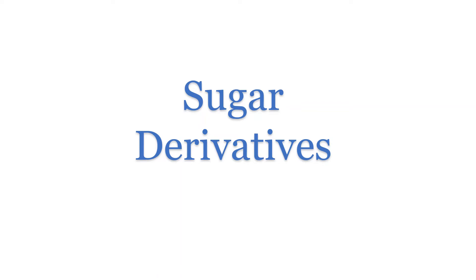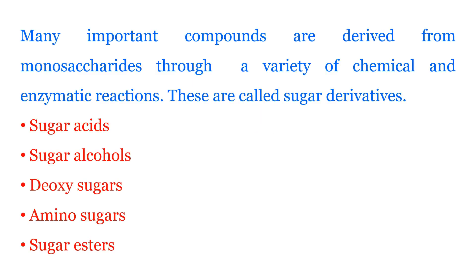Hello students. Today we shall discuss about sugar derivatives. Several important compounds are derived from monosaccharides through a variety of chemical and enzymatic reactions. These compounds are called sugar derivatives. Examples of such sugar derivatives are sugar acids, sugar alcohols, deoxysugars, amino sugars, and sugar esters.